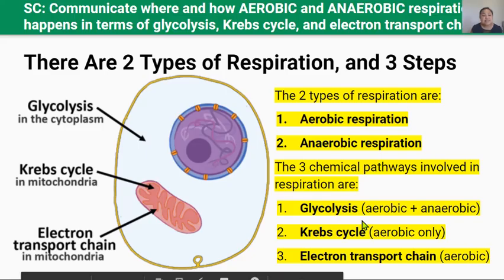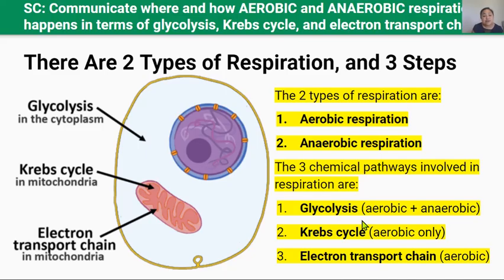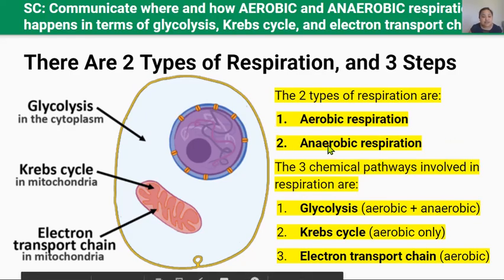ATP is made through the process of cellular respiration. Cellular respiration occurs in both plant and animal cells, and it'll continue to occur as long as the cell is alive. This means that even if you're asleep, your cells are still active and working constantly to make ATP to keep your cells functioning. There are two types of respiration: aerobic respiration and anaerobic respiration.